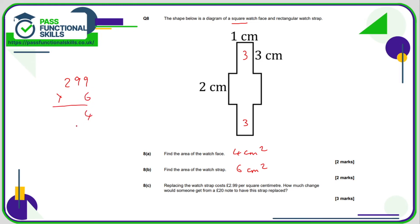299 times by 6. I've just put it into pence. 9, 6 is a 54. 4 carry 5. 9, 6 is a 54. 54 plus 5 is 59. Carry the 5. 2, 6 is a 12. Plus 5 is 17. So it's 1,794 pence, otherwise known as £17.94.